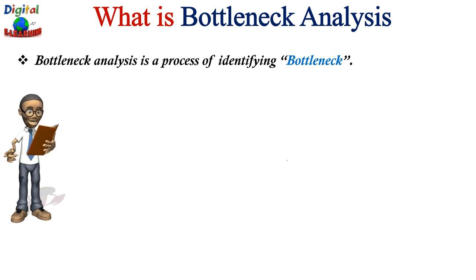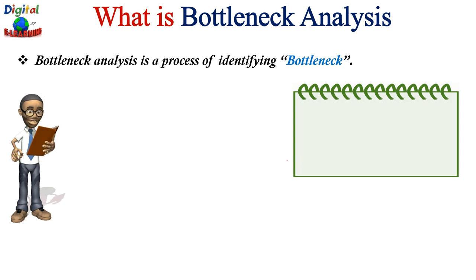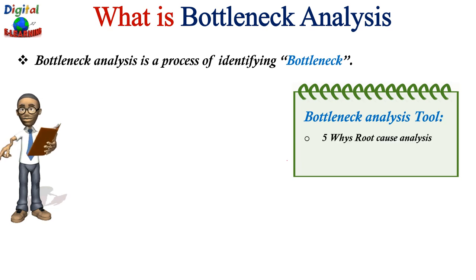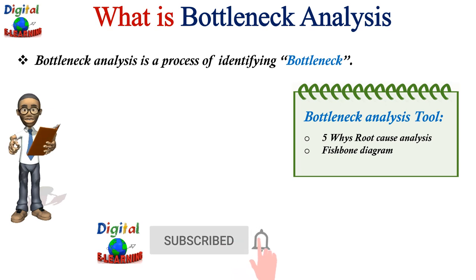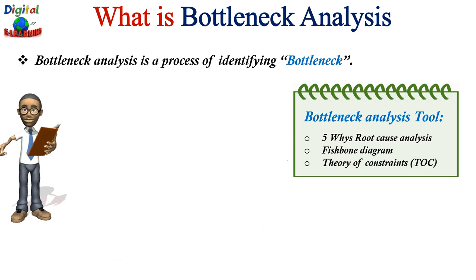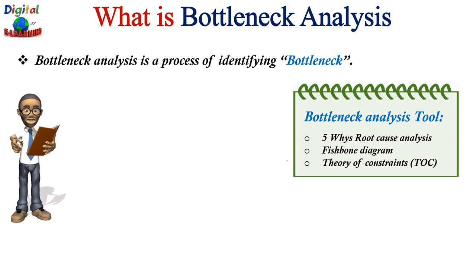After completing this process and identifying the bottleneck, we can look for potential solutions. Common bottleneck analysis tools include: 5 Why root cause analysis, where you ask 'why' five times to arrive at the root cause; the fishbone diagram, a visual method to show root cause analysis identifying major and minor causes; and the Theory of Constraints, a methodology for identifying the most important constraint standing in the way of achieving a goal, then removing those constraints from the system.